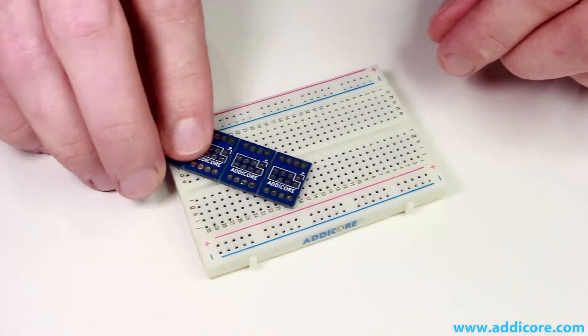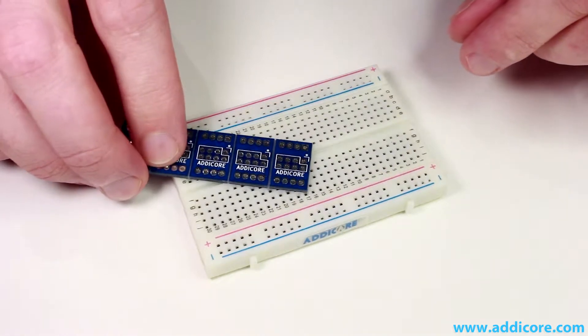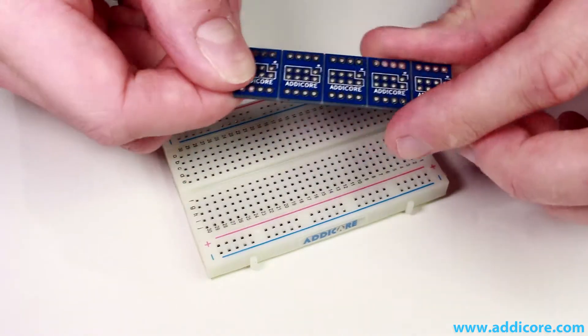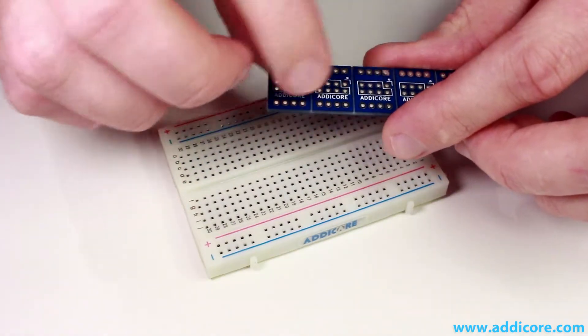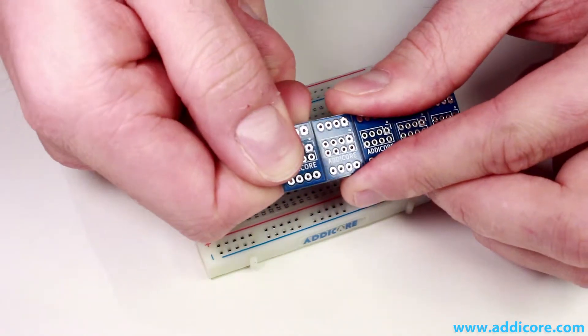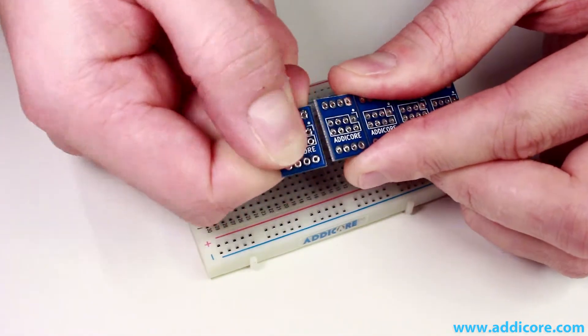So these little adapters are made to make that conversion for us. If you've received these modules and they came as a strip like this or one or two linked together, what you have to do to break them apart is just grab one and snap it off.